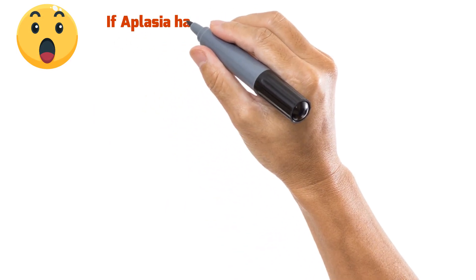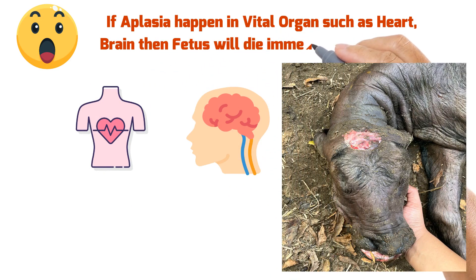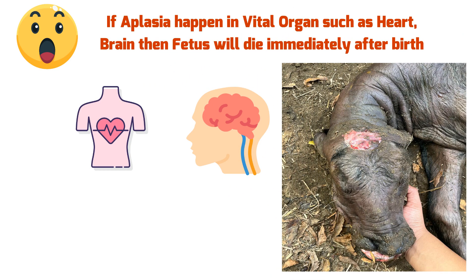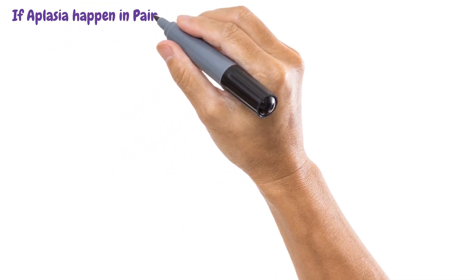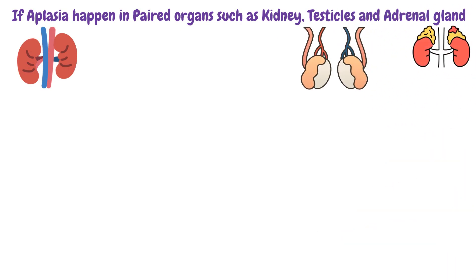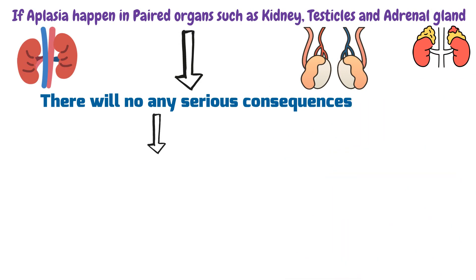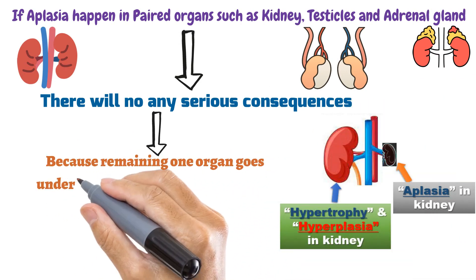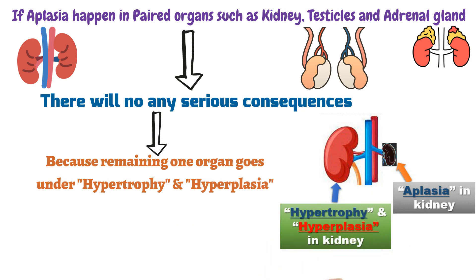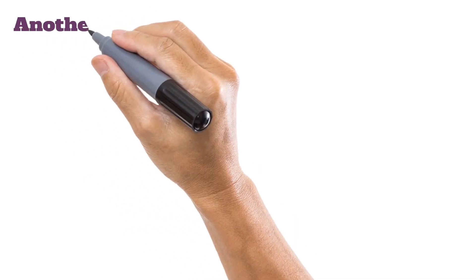If Aplasia happens in a vital organ such as the heart or brain, the fetus will die immediately after birth because the body cannot function without these organs. However, if Aplasia happens in a paired organ such as a kidney, testicle, or adrenal gland, there are no serious consequences, because the remaining organ undergoes hypertrophy and hyperplasia, taking over the work of the absent organ so the body can live with just one.